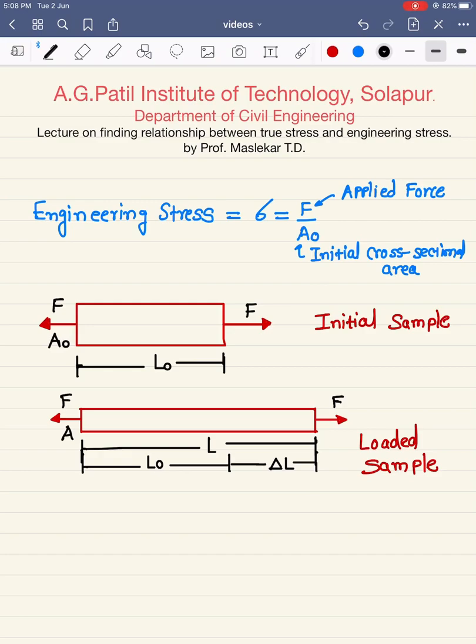Let's consider two samples: one is the initial sample, that is before loading, and the other is the loaded sample. The initial length is L0, the loaded length is L, and the force applied is F.